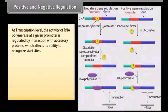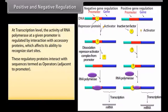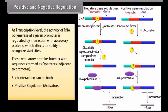At the transcription level, the activity of RNA polymerase at a given promoter is regulated by interaction with accessory proteins which affects its ability to recognize start sites. These regulatory proteins interact with sequences termed as operators adjacent to the promoter. Such interaction can be both positive regulation via activators, and negative regulation via repressors.